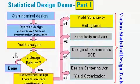Okay, here's a summary of what we did. We started with a nominal design, we optimized it, and then we ran yield analysis. We found out that we had low yield. Then we decided to use statistical design tools in ADS to find out where the problem is coming from. We have shown you the use of the yield sensitivity histograms.